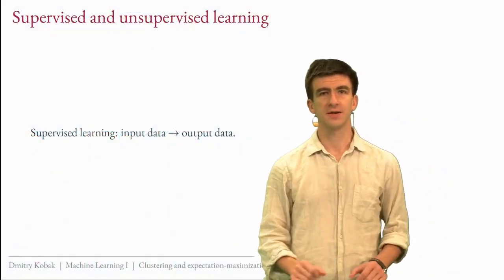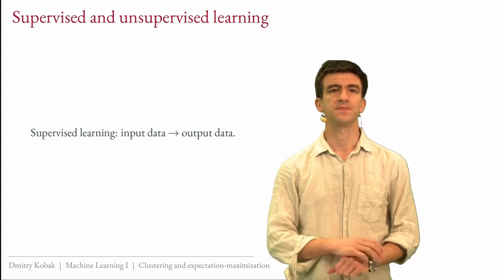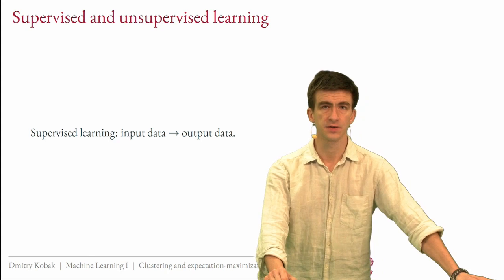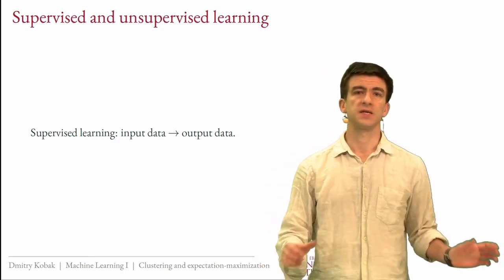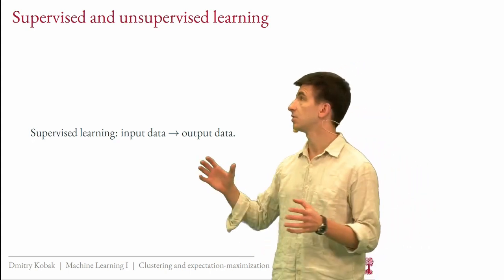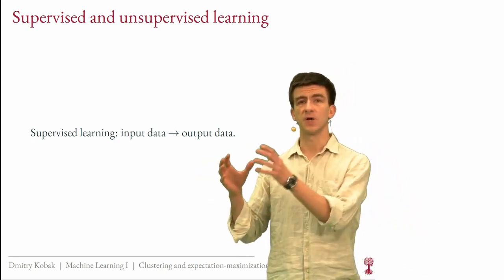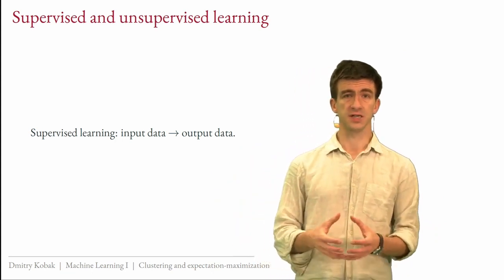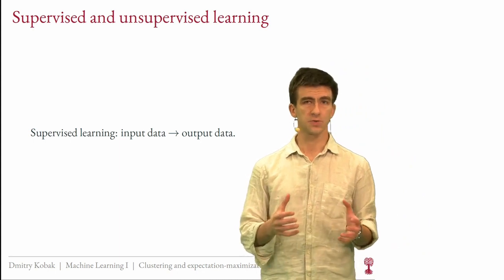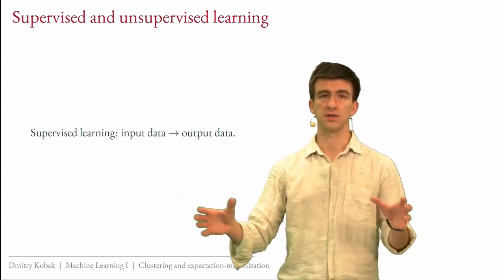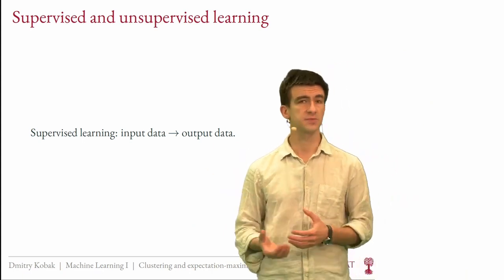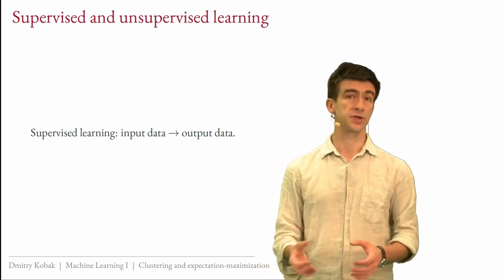Hello and welcome to Lecture 9 of our Introduction to Machine Learning course. We are going to start talking about unsupervised learning in the remaining three lectures. We spent eight lectures talking about supervised learning problems. Supervised learning means we have some input data and output data we are trying to predict — these are always prediction problems where we learn the mapping between input and output. This can be regression for continuous variables or classification for categorical outputs.